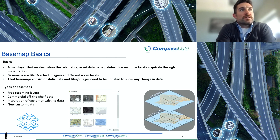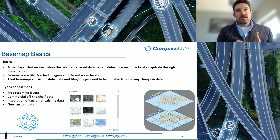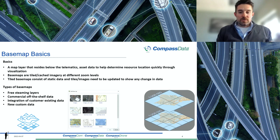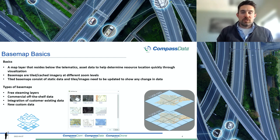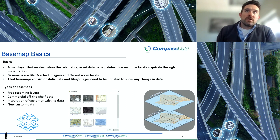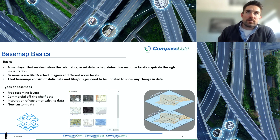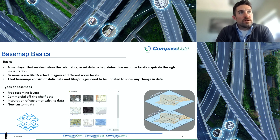So, base map basics. A map layer really resides below the telematics, and the information — the layers, the asset data — is used to help determine where your resources are on a map, and helps you quickly visualize the location of your information. These base maps are tiled cached imagery — not optical imagery, but raster data sets that you take a snapshot of and tile down based on different zoom levels with different detail. It's all done to render really quickly so it doesn't slow down your telematics, your CompassComm tracking side.